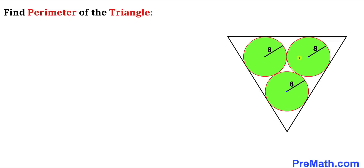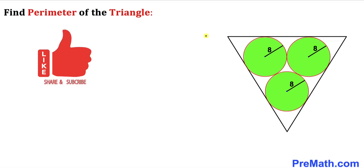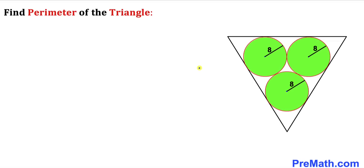In this video we have got three identical circles inscribed in a triangle, as you can see in this diagram. The radius of each circle is 8 units and they are tangent to each other. We are going to calculate the perimeter of this triangle. All these circles are tangent to the sides of this given triangle.